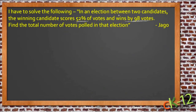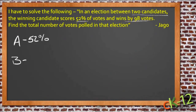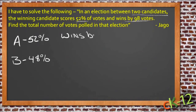What information do we have? We know that there are two candidates, so let's start by naming them candidate A and candidate B. We know that the winning candidate — that's candidate A — scores 52% of the votes. That would mean that since B got the rest of them, he got 48% of the votes. We also know that candidate A wins by 98 votes.